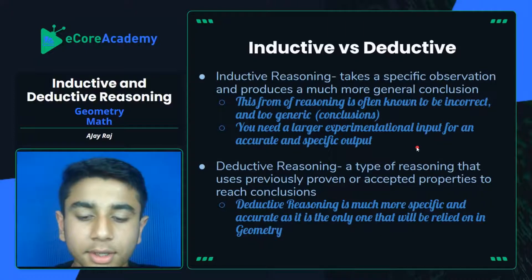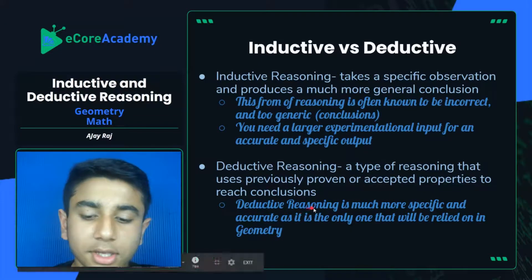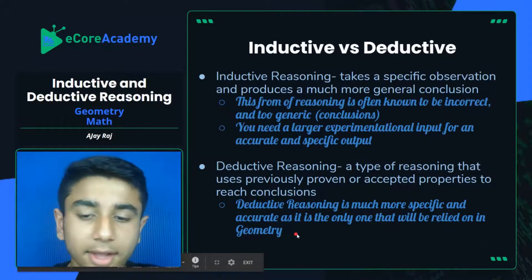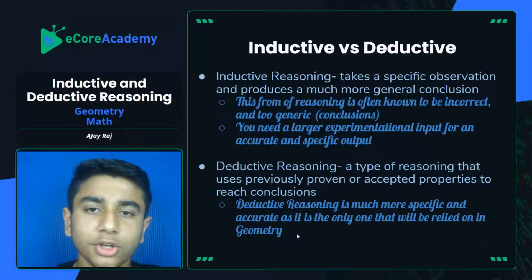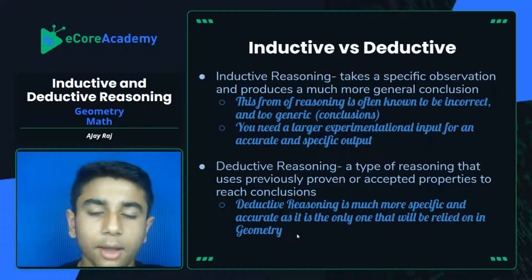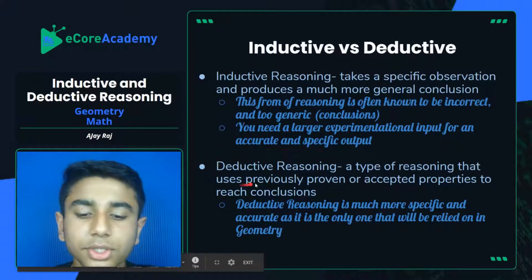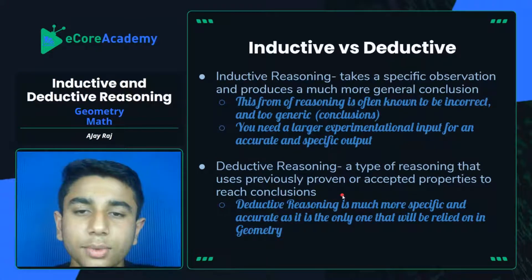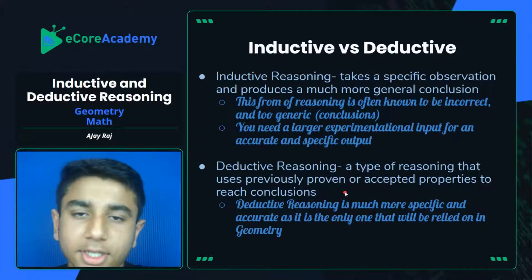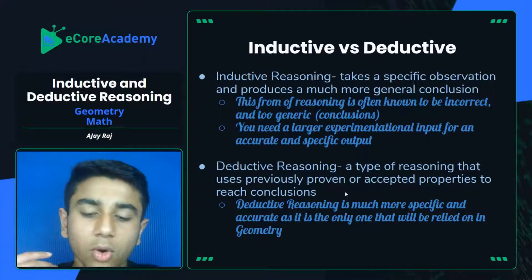Deductive reasoning is basically the complete opposite of inductive reasoning. Deductive reasoning is a type of reasoning that uses previously proven or accepted properties to reach conclusions. It's much more specific and accurate, and it's the only one that will be relied on in geometry. It takes a very generic observation — meaning a much larger experimental input — but produces a very specific and accurate conclusion. It uses proven or accepted properties such as parallel lines, taking proof that already exists and using it as part of the reasoning process.